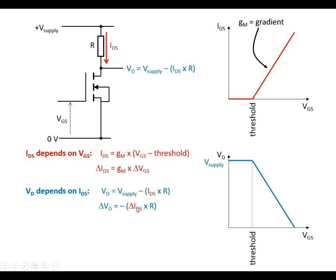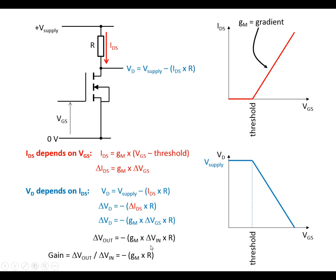Substituting in, we end up with: the change in Vout is equal to the change in Vin times the transconductance times the resistance. It has a minus sign because as Vin goes up, Vout goes down, as this part of the slope shows. Dividing both sides by the change in Vin, we get the gain formula: change in Vout over change in Vin equals minus gm times R. And that's what you'll find on the formula sheet.